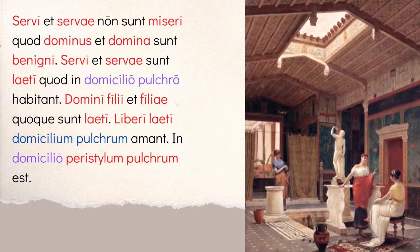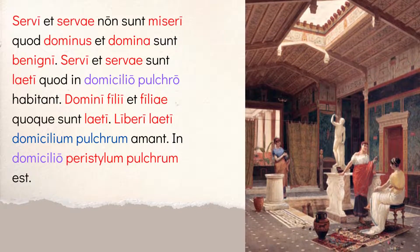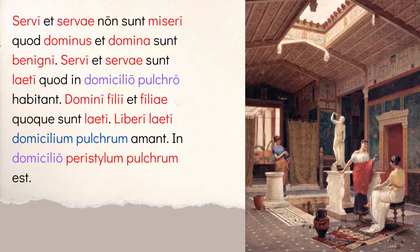Then: servi et servae non sunt miserae, quo dominus et domina sunt benigni. The slaves and slave women are not miserable. Notice miserae technically matches servae — when you have a mixed gender subject in Latin, you default to the masculine ending when men are present, which is what you're seeing here. The master and mistress are benigni — kind — using the long I ending because you have two people and one is male, so it's masculine nominative plural.